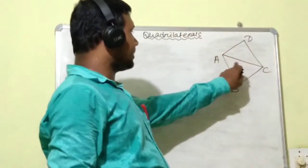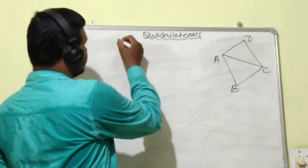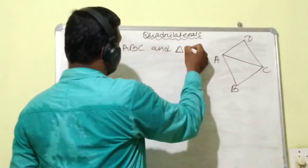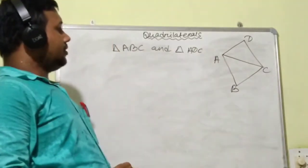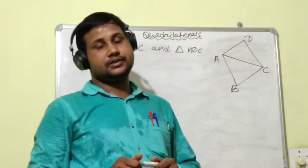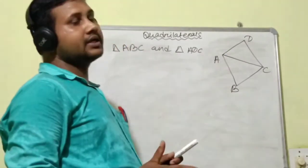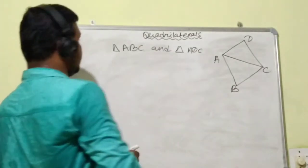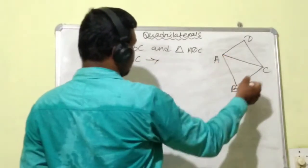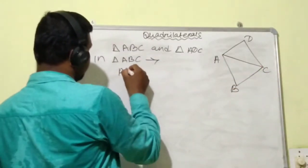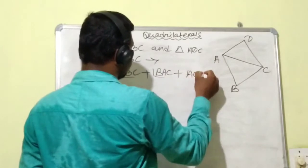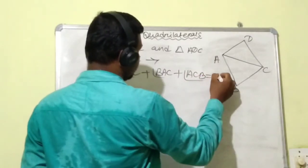After joining the diagonal AC, the quadrilateral divides into two triangles — triangle ABC and triangle ACD. We will use the angle sum property of a triangle to find the angle sum property of a quadrilateral. In triangle ABC, the angles are: angle BAC plus angle ABC plus angle ACB, and their sum is equal to 180 degrees. This is equation 1.